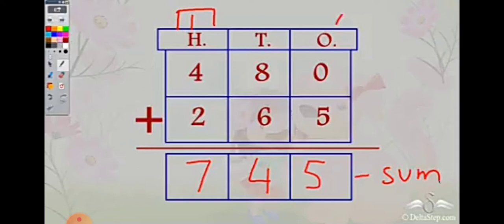Another example: 480 plus 265. Rule number 1: always add the units place first. 0 plus 5 is 5 — since 0 means nothing, 5 comes directly. Then 8 plus 6 is 14, so we write only 4 and carry 1 to the hundreds place. While adding hundreds: 1 plus 4 is 5, and 5 plus 2 is 7. The answer is 745.